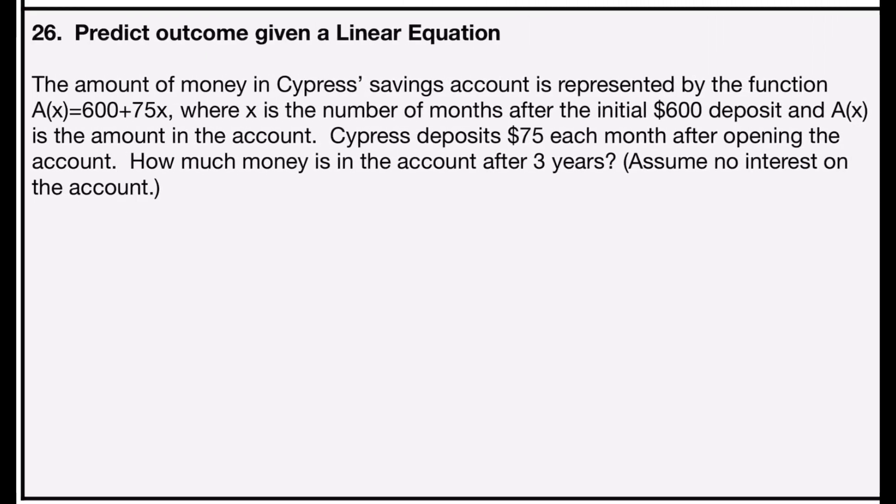Problem number 26 also asks you to predict an outcome given a linear equation. It says the amount of money in Cypress's savings account is represented by a(x) = 600 + 75x, where x is the number of months after the initial $600 deposit and a(x) is the amount in the account. Cypress deposits $75 each month. How much money is in the account after three years, assuming no interest?